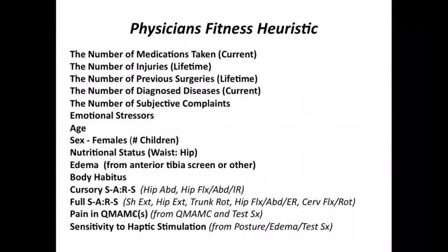We also consider emotional stressors and age. Some of the ideas associated with age and senescence show us that as we age, our ability to make excursions in allostasis and return are somewhat attenuated. Spallanzani's law is pretty obvious: our ability to recover as we get older — chronologically and biologically — is hindered. The number of children that females have can be a stressful event. Nutritional status, that waist-to-hip ratio, is a down-and-dirty glucose metabolism and insulin control process indicator that might show up in the body.